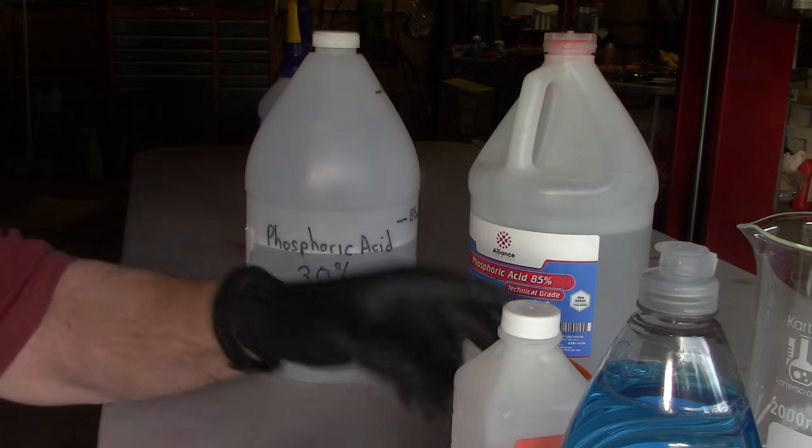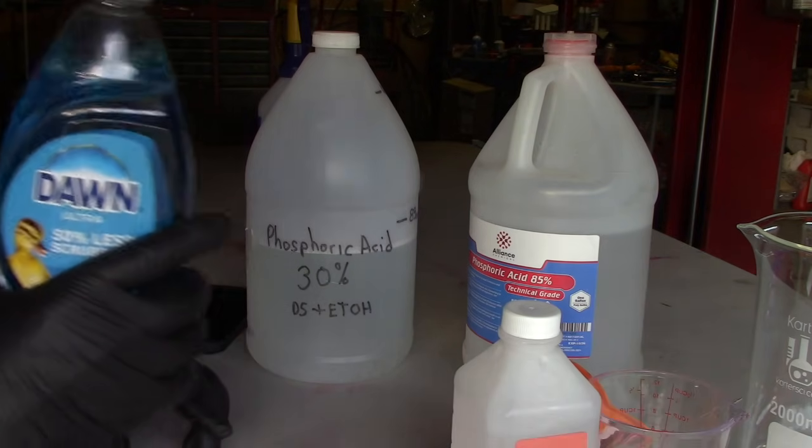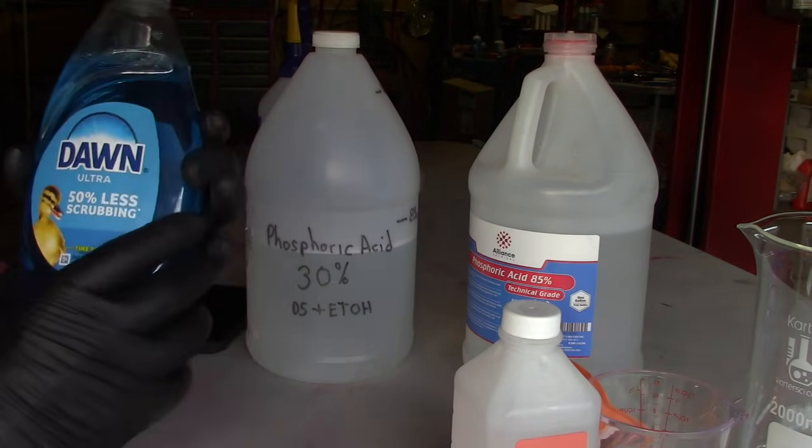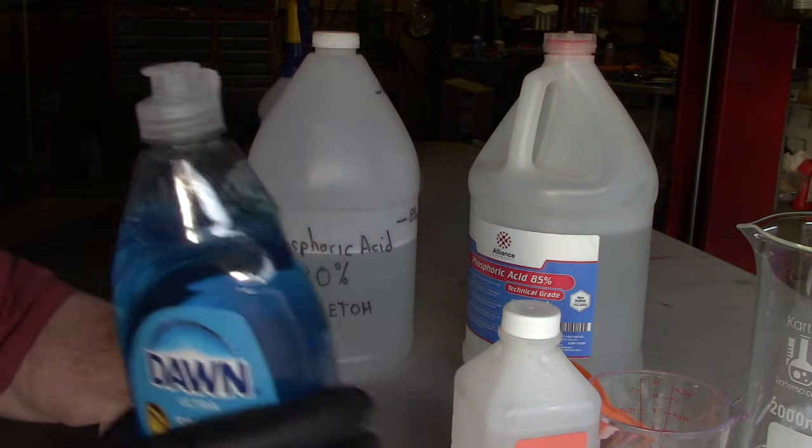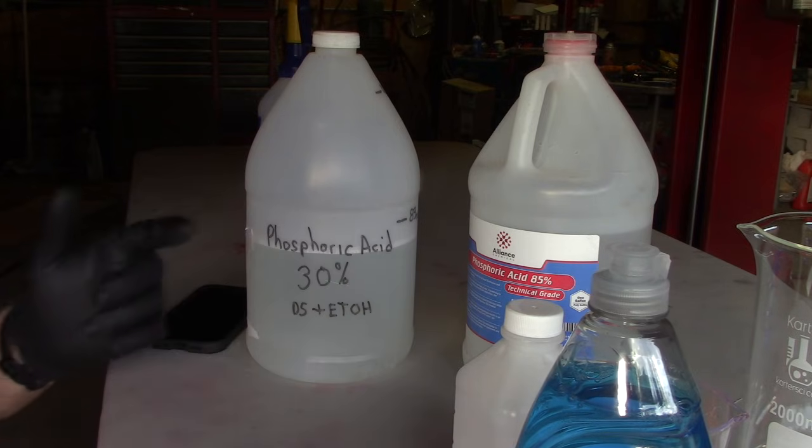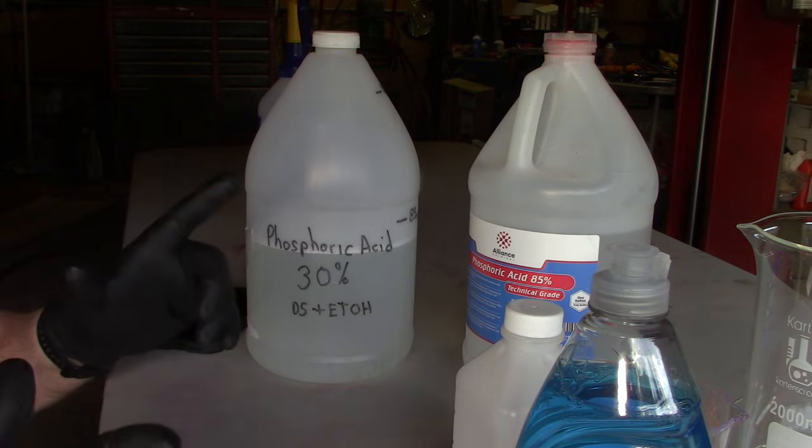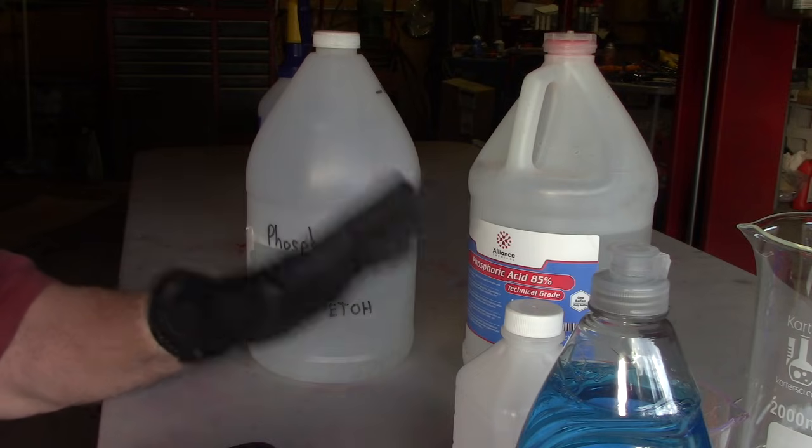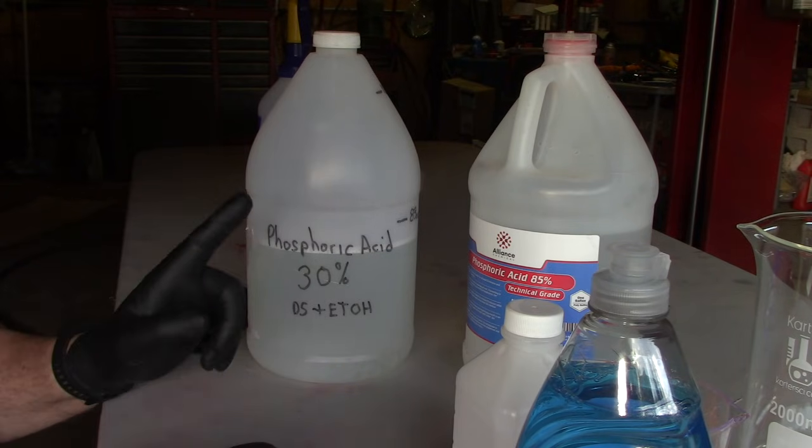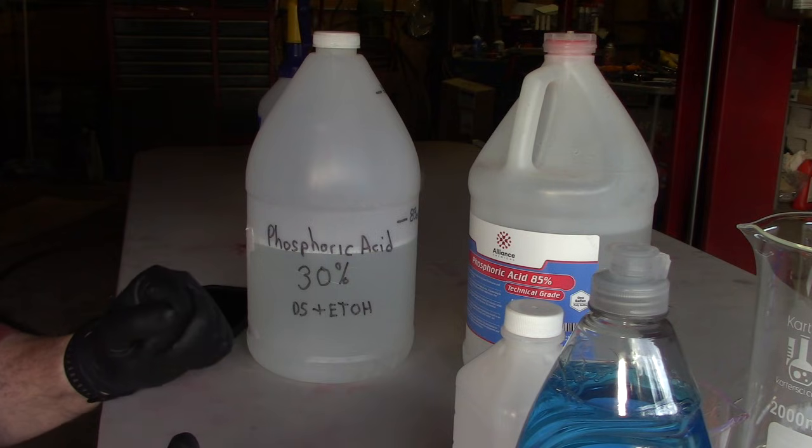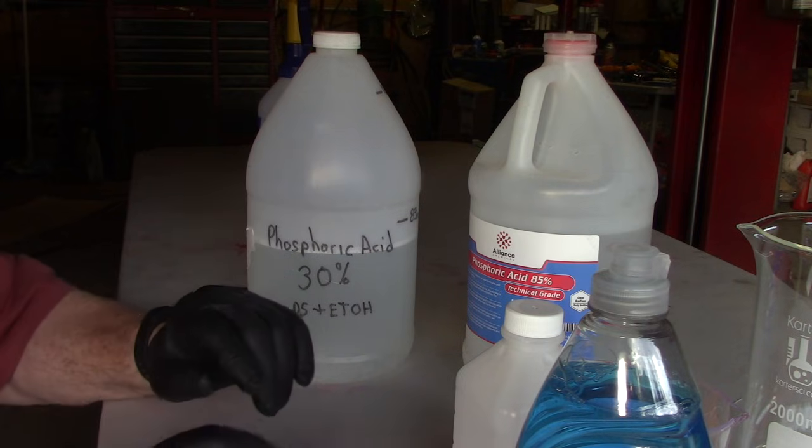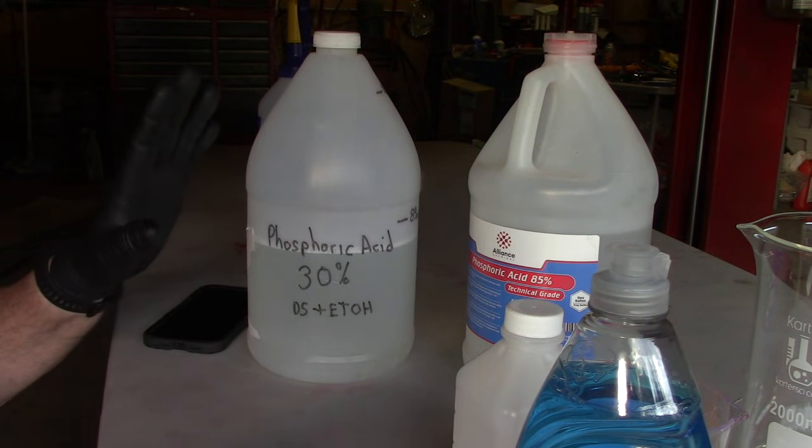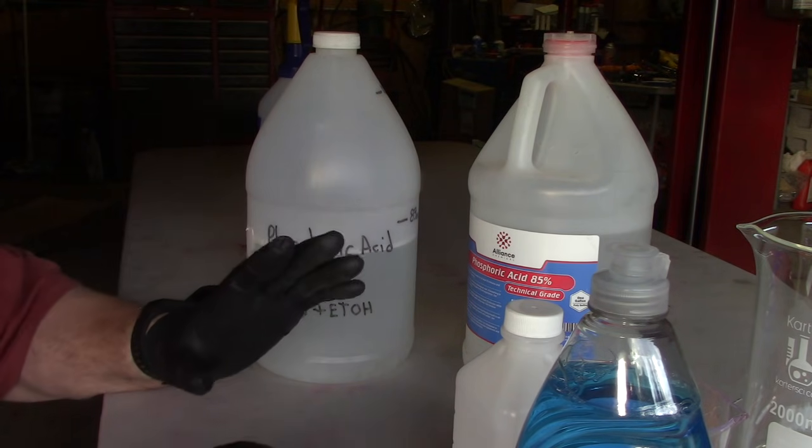And then as far as soap, one tablespoon per gallon or four milliliters per liter. And I'm going to make a video where I demonstrate using this as a rust converter. This also works great as a cleaning agent. I've got some alloy rims that I've used this on and it works well as a cleaning agent.